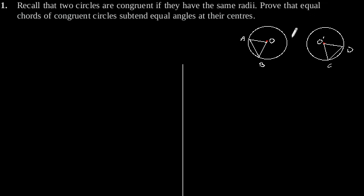To prove that equal chords of congruent circles subtend equal angles at their centers, consider two congruent circles having centers O and O', and two chords AB and CD of equal length.